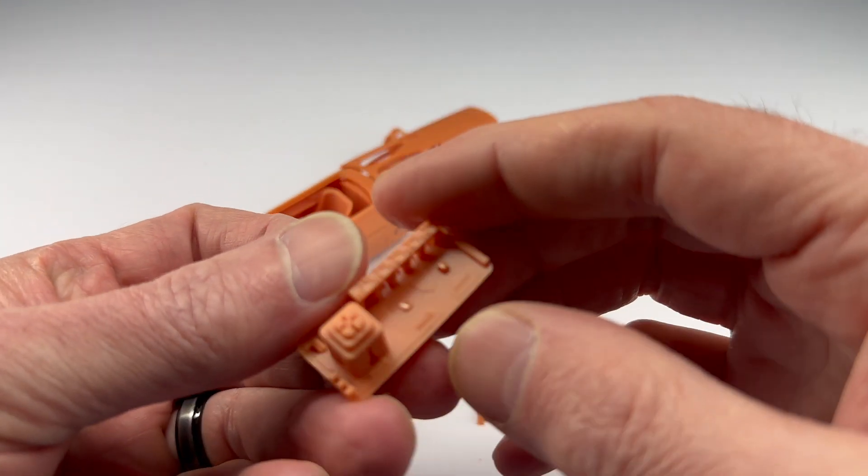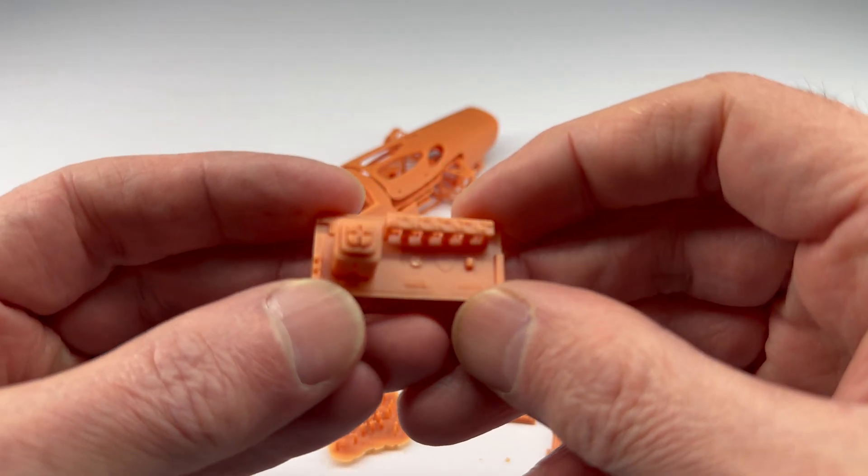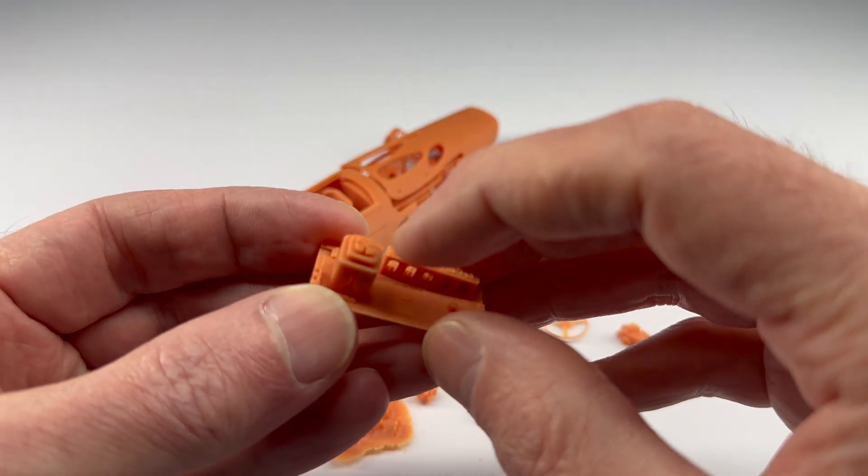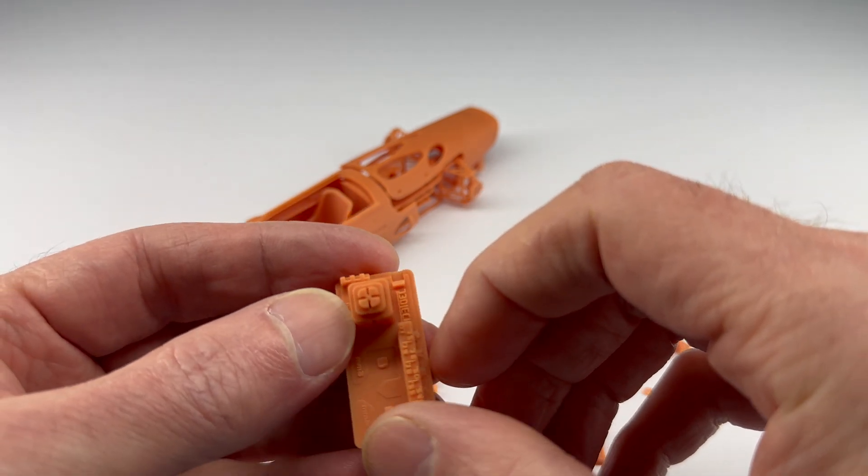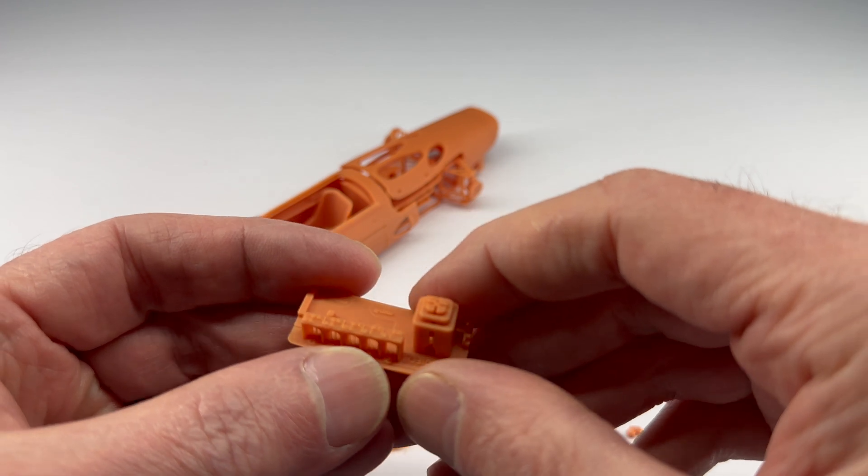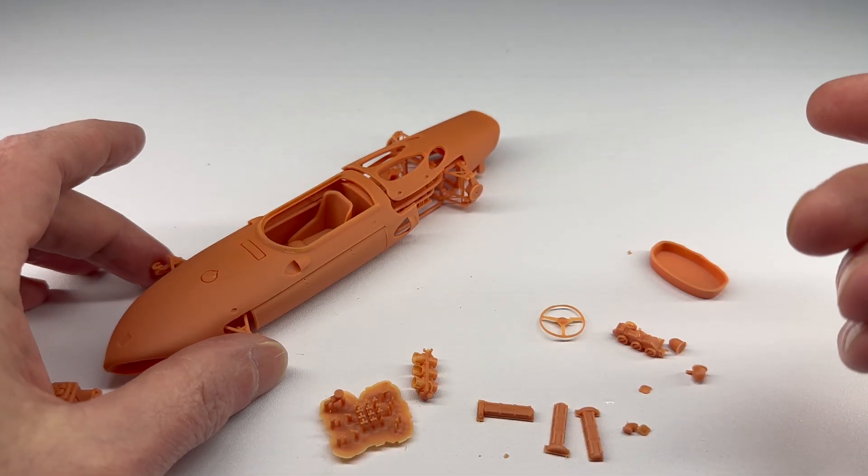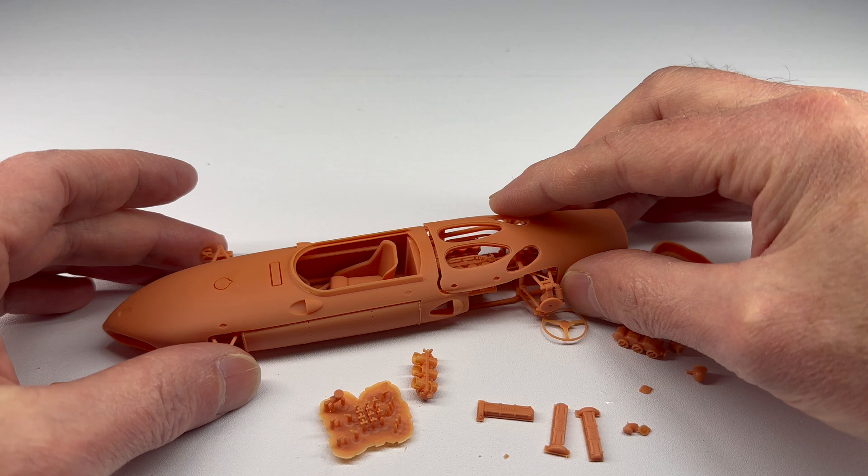So in summary, the first test print that I did was at 2.4 seconds, and this was tight to put in. I changed it to 2.1 seconds, got a much better fit for the test print, which then I printed the Ferrari and got great fitting results.